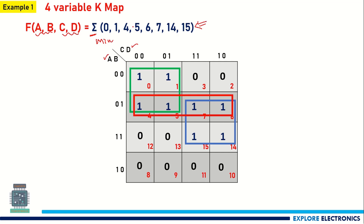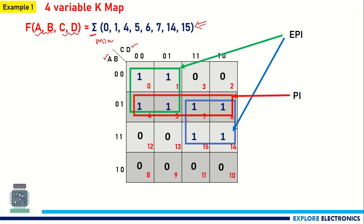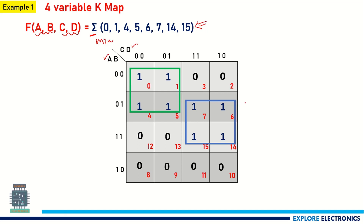We could create one more group, but there is no need because cells 5 and 7 are already covered in a four-cell group — that additional group would only be a prime implicant, not an essential prime implicant. Since no cell is left uncovered, we proceed to write the expressions for just these two groups.